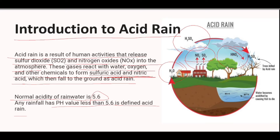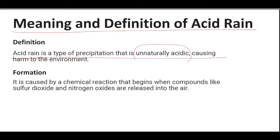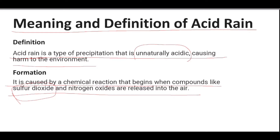A simple definition of acid rain is: acid rain is a type of precipitation that is unnaturally acidic, causing harm to the environment. The formation of acid rain is caused by a chemical reaction that begins when compounds like sulfur dioxide and nitrogen oxides are released into the air — these two gases are the major gases responsible for acid rain.